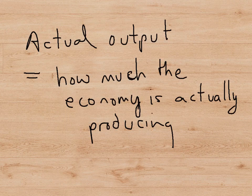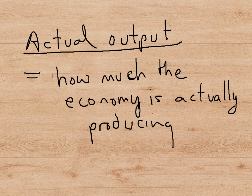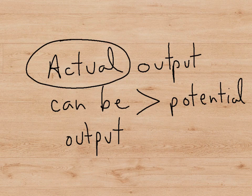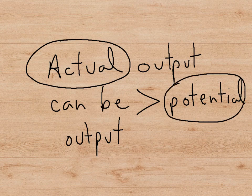Now, we have to look at the words actual output. Actual output is what the economy is actually producing — it's the actual GDP. Not the potential, but the actual. Now, strangely enough, actual output can actually be greater than potential output. And that's just because of the way we define potential. We define potential as the output that we are making when all the resources are being used normally, at their normal rate.